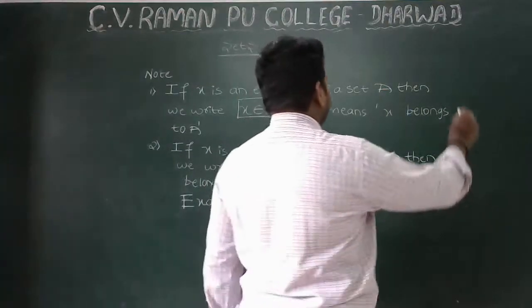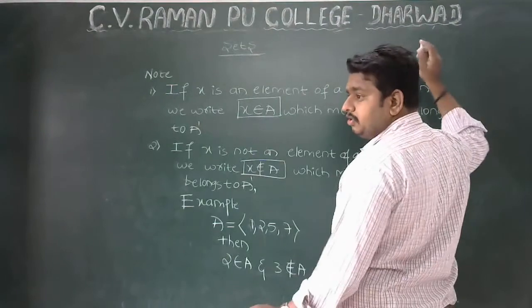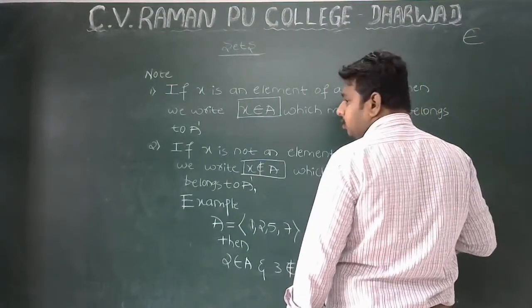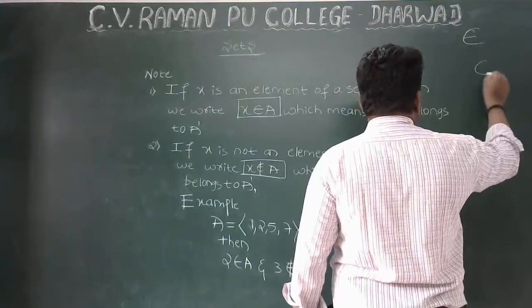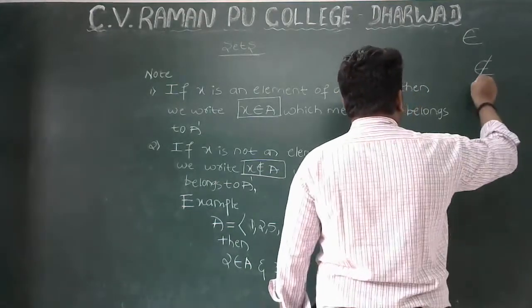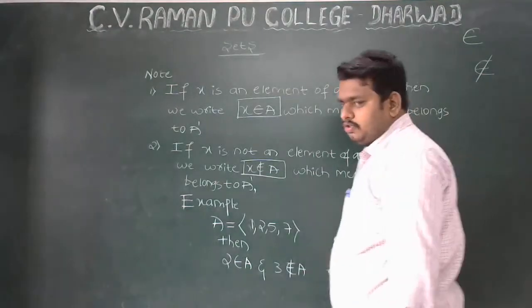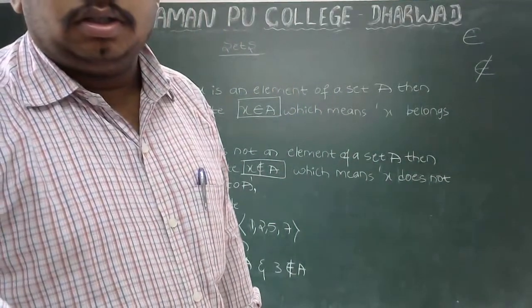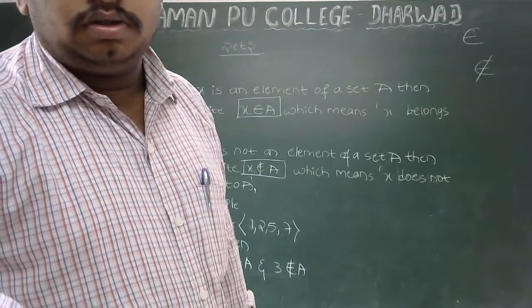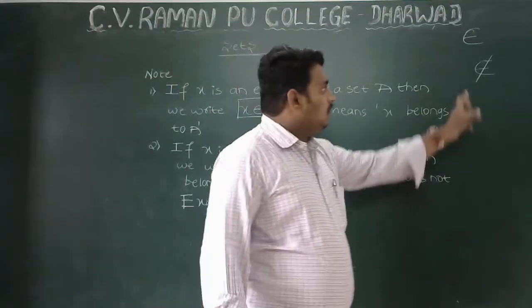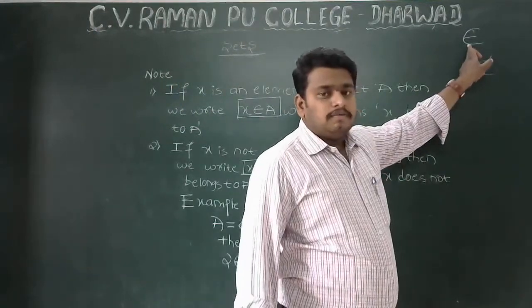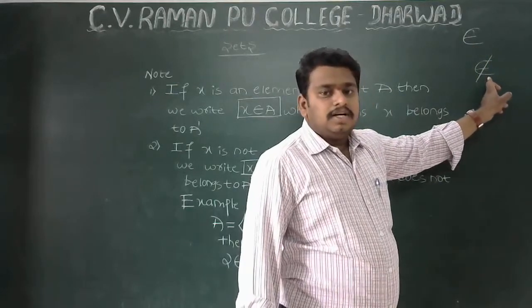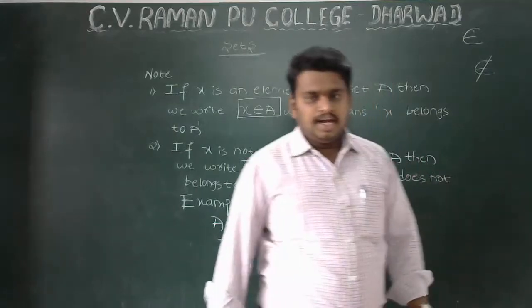Just remember: we use the symbol ∈ for 'belongs to', and if you put a slash through it, that symbol means 'does not belong to'.